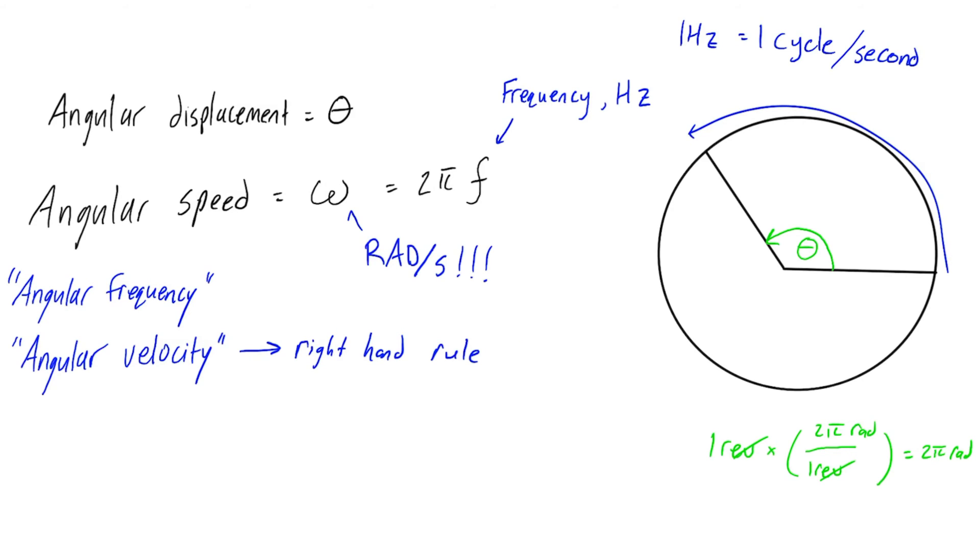If our angular speed is changing, we can define an average angular speed. We would have omega average, and that is really just equal to you take the average of the values, so the initial plus the final divided by two. Should be pretty straightforward.